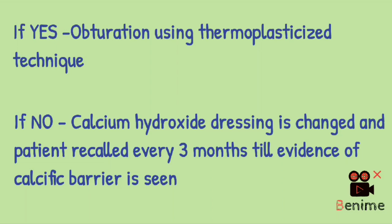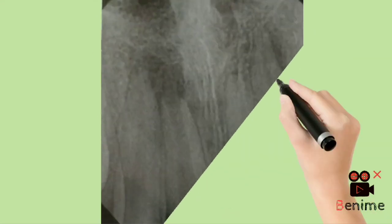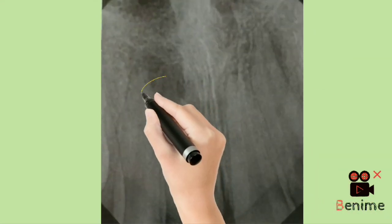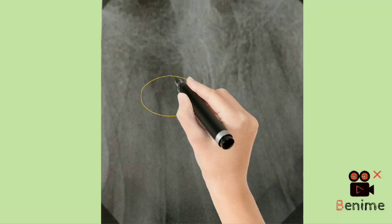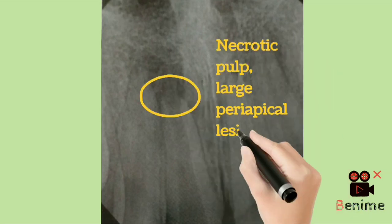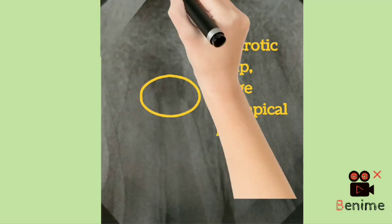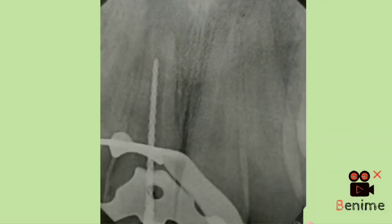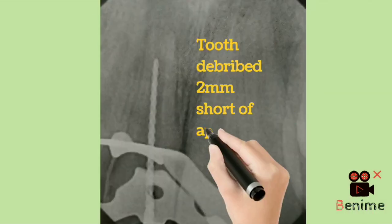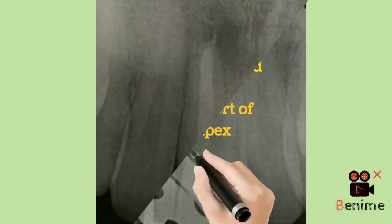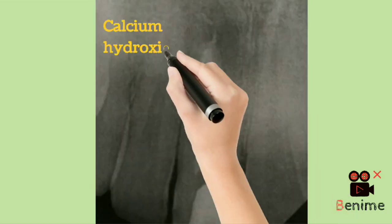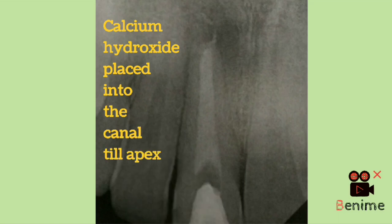Now presenting a case of 15 years old boy with history of trauma to the maxillary central incisor. As you can see, the root apex is open with necrotic pulp and large periapical lesion. So the tooth has been debrided 2mm short of the radiographic apex. Calcium hydroxide is then placed into the canal up to the apex.